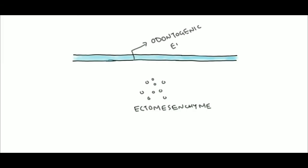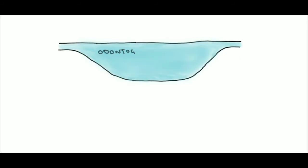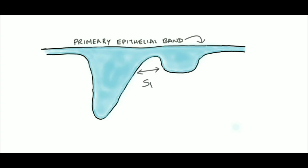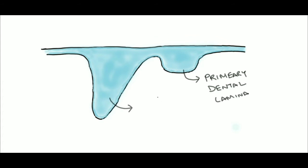The odontogenic epithelium or ectoderm interacts with the ectomesenchyme cells through the conduction of signals, which results in odontogenic epithelium proliferation. The proliferation occurs due to a shift of the mitotic spindles of the basal cells. Later, they split into two parts: primary dental lamina and the vestibular lamina.